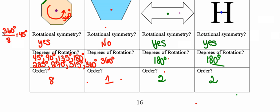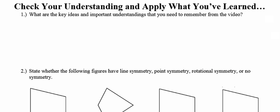At the top of the next page, jot down key ideas and important understandings to take away from this video. If you have questions about anything I mentioned, this is a good place to write them down so you can ask about them in class. Problems 2 and 3 on the next page will ask you about rotational symmetry and point symmetry from this video, but also about line symmetry from earlier in the unit. So if you need to, take some time to revisit the video on line symmetry to recall those key ideas.